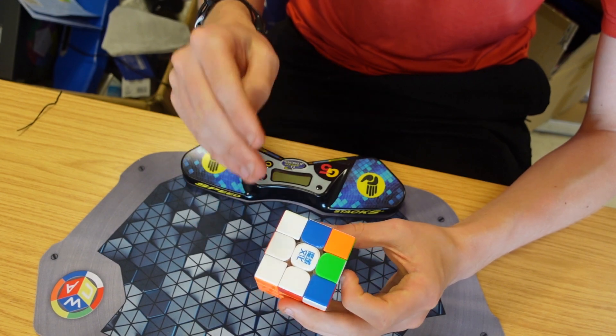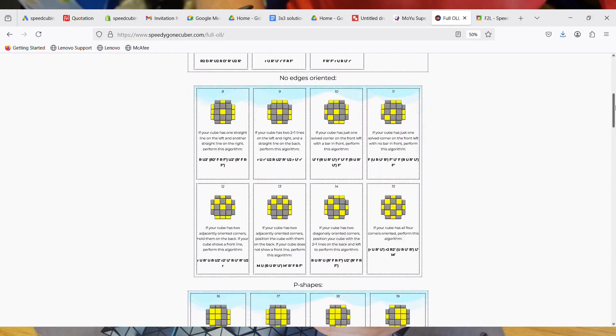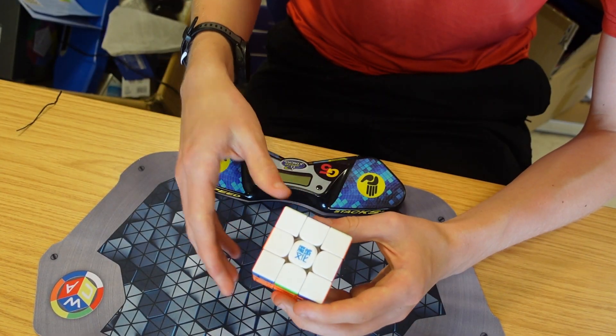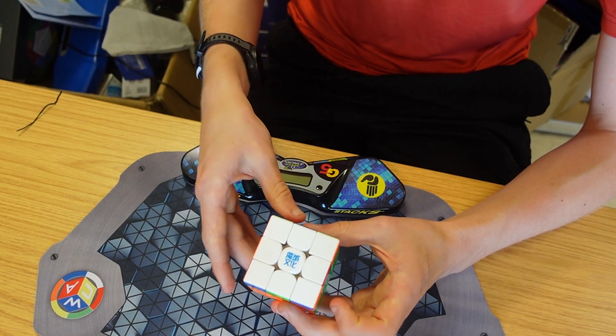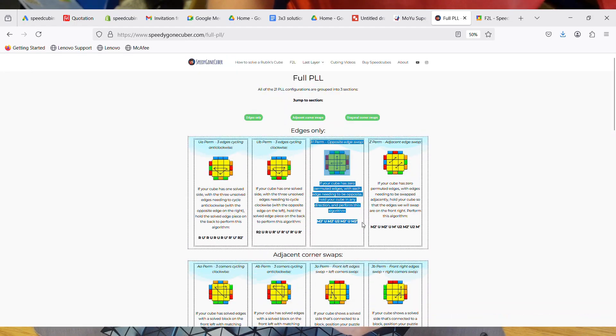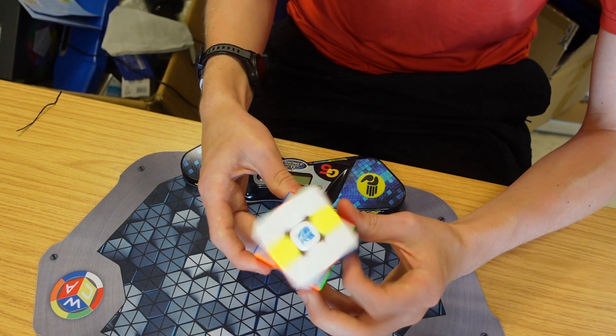Then we do what's called OLL, which is one algorithm that's going to get all of this face one color. There are 57 algorithms to choose from. Then we do what's called PLL which is going to finish it off in one look. There are 21 possible algorithms to choose from.